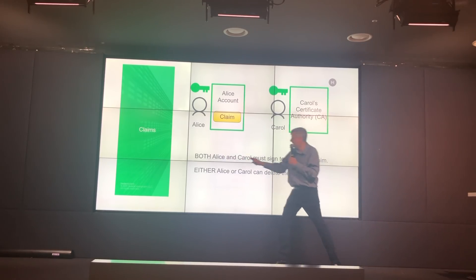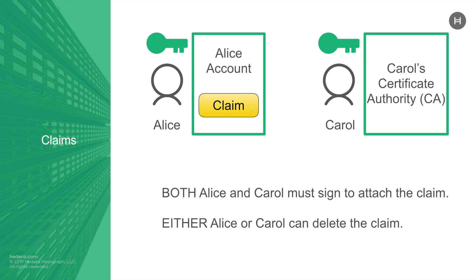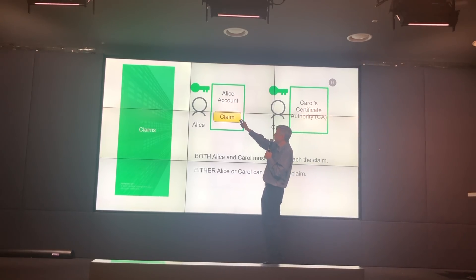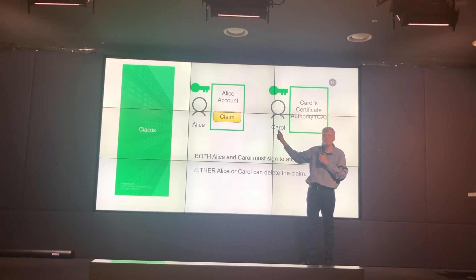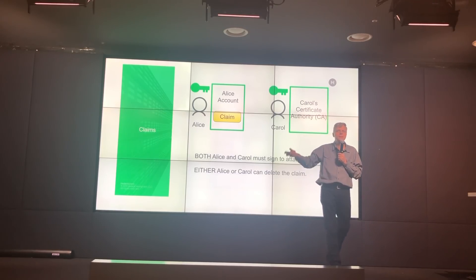The important thing about the claim is that it is signed by both Alice and Carol, but it can be removed by either one of them. Both Alice and Carol must sign to attach this claim to the account, but either one can pull it off. Alice is involved because it's her account — she should control it. Carol is able to remove it by herself because that's what revoking it is. If Alice does something bad, Carol can revoke the claim.